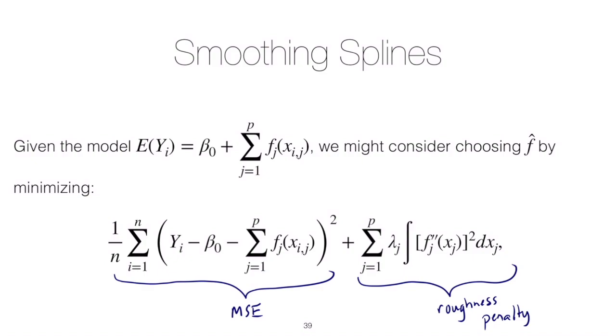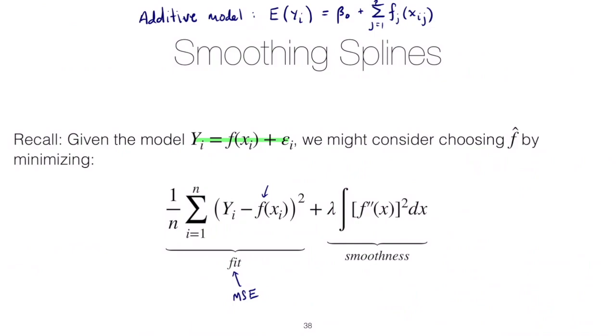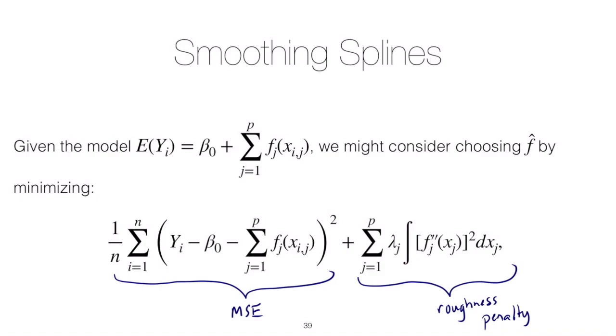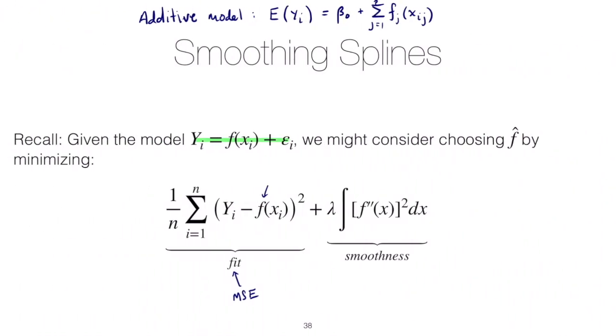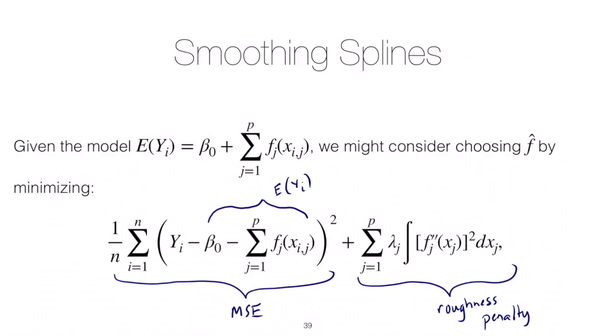Instead of just subtracting off f from our y as we did here, we are subtracting off the full expected value. This term here is our expected value of y, and that's exactly what we did in the previous case—it's just that this f was just our expected value of y. So the structure here should look the same. We had to generalize the roughness term too.